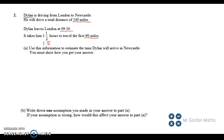So we're going to have to estimate, keyword there, estimate, the time that Dylan will arrive in Newcastle. So Newcastle is 240 miles away. And we probably need to work out how fast is he travelling in this first initial 90 miles. It's taking him an hour and a half to do the first 90 miles. Let's start thinking about the formulas.